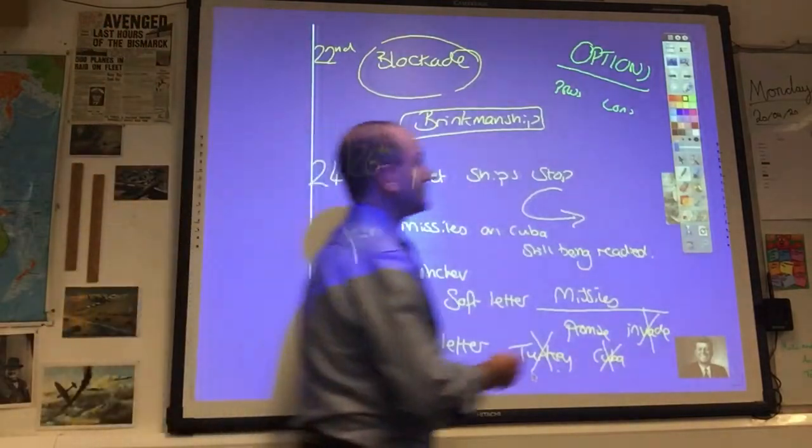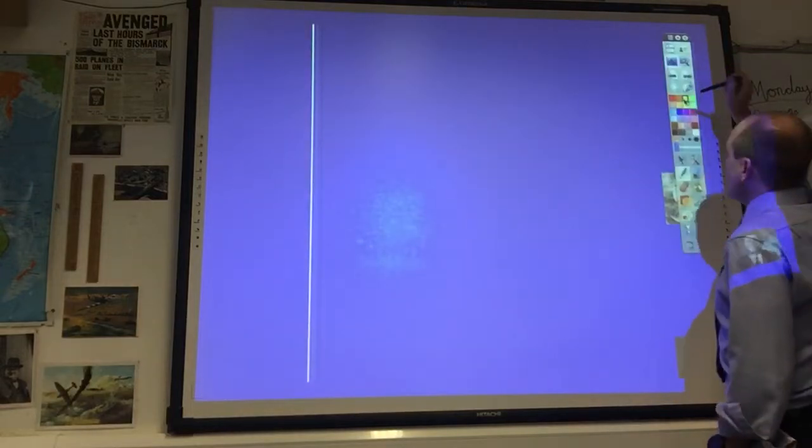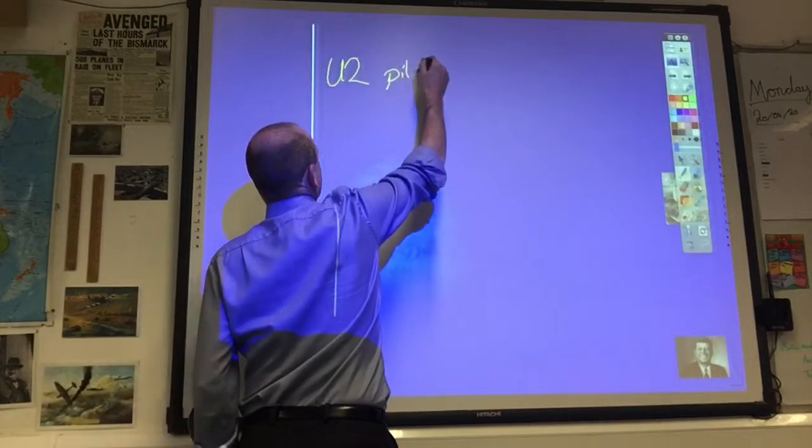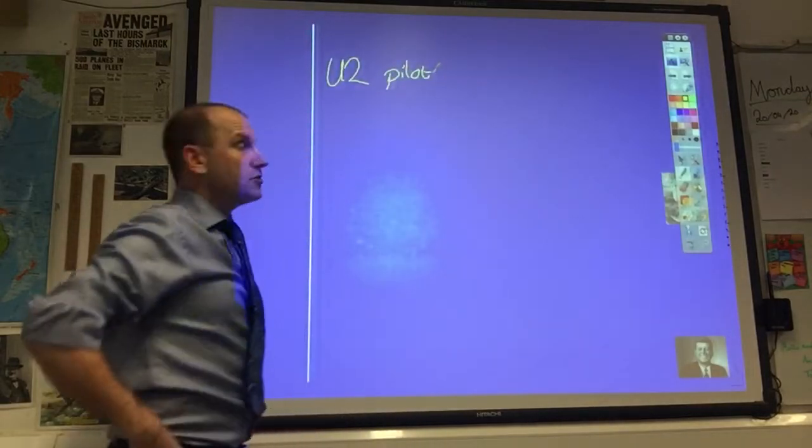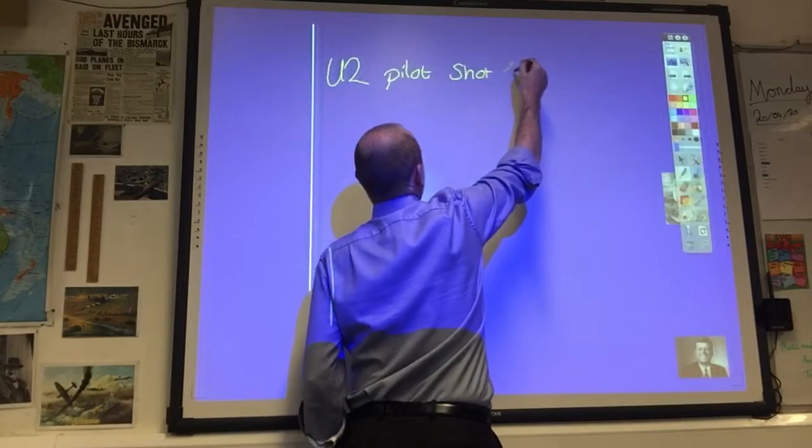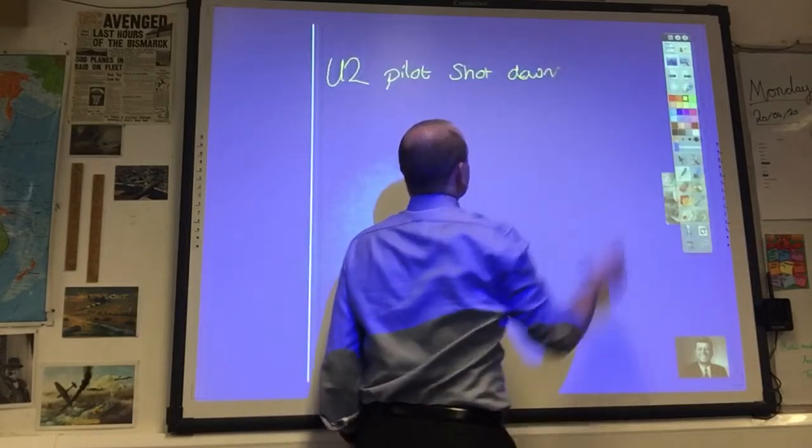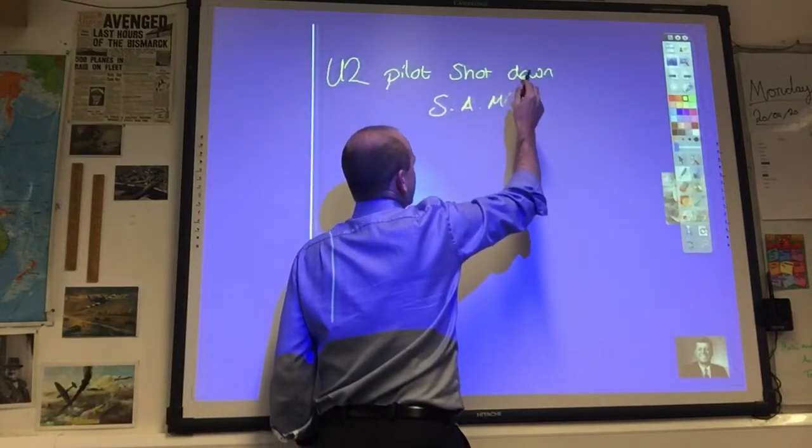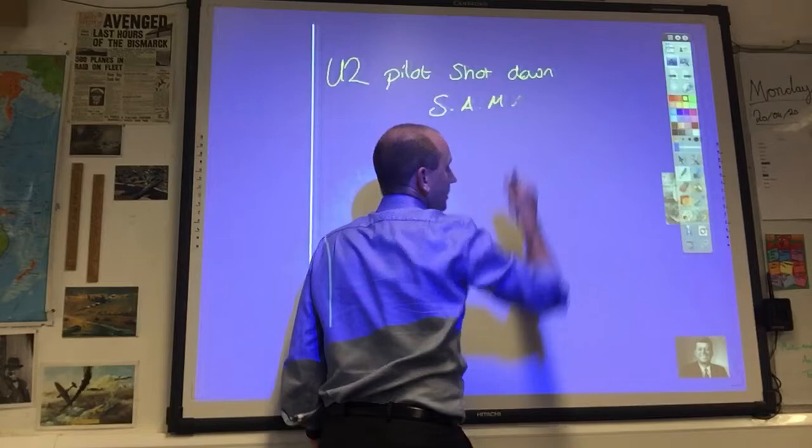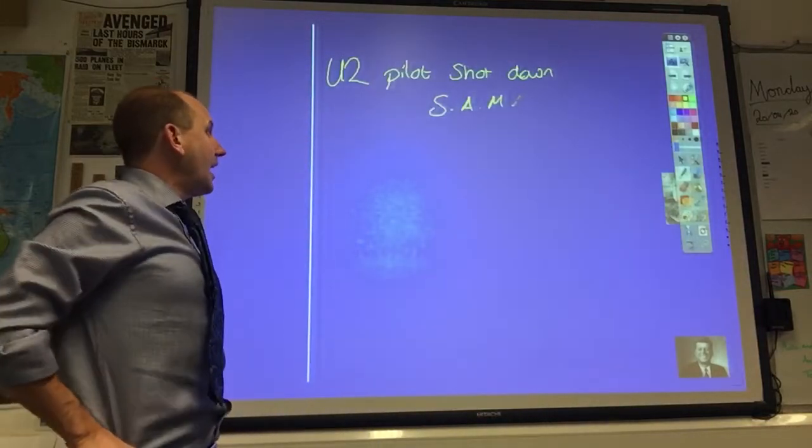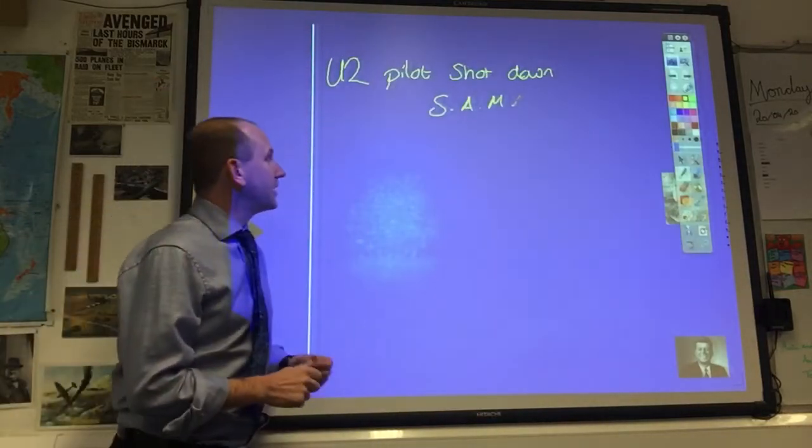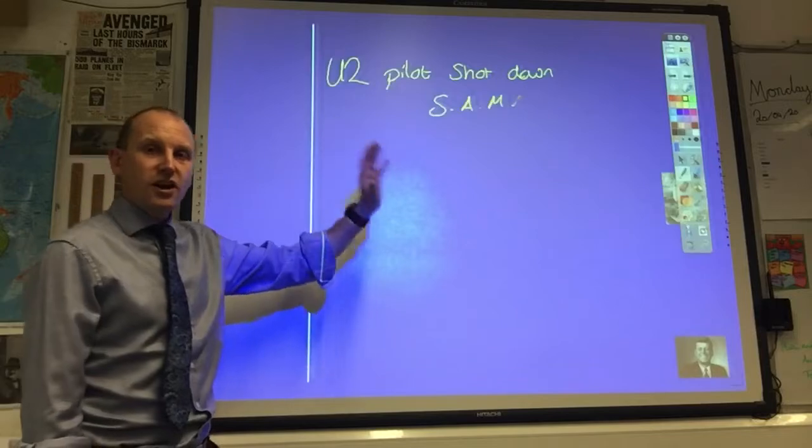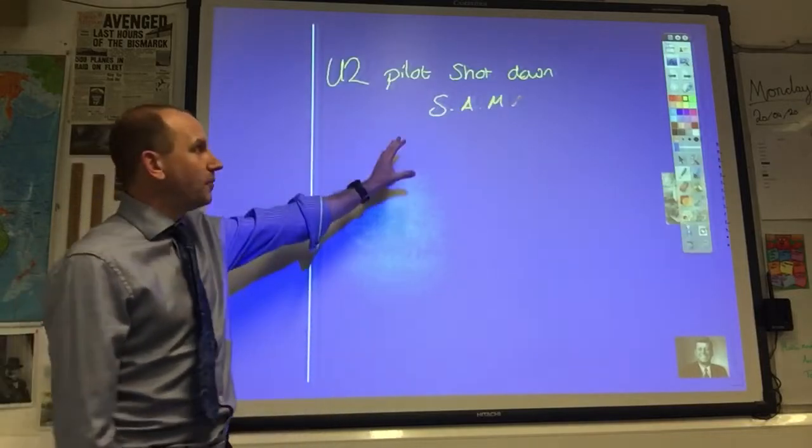While they're debating this, on the 27th, on the same day, the crisis escalates again. The only casualty in the crisis, a U-2 pilot is shot down, or a U-2 plane is shot down, and he is killed. Shot down by a surface-to-air missile, this is not a nuclear missile, it's one just designed to take out individual planes. On Cuba, launched by a Russian crew, probably by some itchy trigger-thinking local commander. Kennedy could have escalated the crisis here, he could have gone to full-scale nuclear war, he decides to do nothing in response. He doesn't bomb the SAM site.